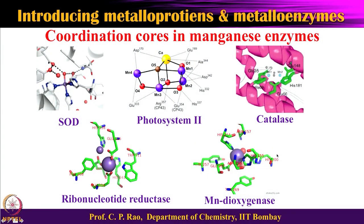Before going into the enzymes, the metal centers are shown directly. In manganese SOD there is one manganese bound by three histidines. In photosystem 2 there are four manganese (purple) and one calcium — the tetramanganese-calcium cluster. The catalase has two manganese centers, each with a core. The oxygen reduction chemistry goes: O₂ + 1e⁻ → O₂⁻ (superoxide); O₂⁻ + 1e⁻ + 2H⁺ → H₂O₂. SOD handles the left side, catalase handles H₂O₂ → H₂O.